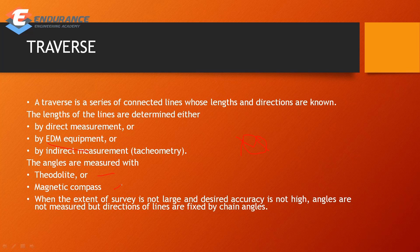The angle or direction of the line can be determined using a magnetic compass. When the extent of the survey is not large and high accuracy is not required, angles are not measured. Instead, the direction of lines is fixed by chain angles.